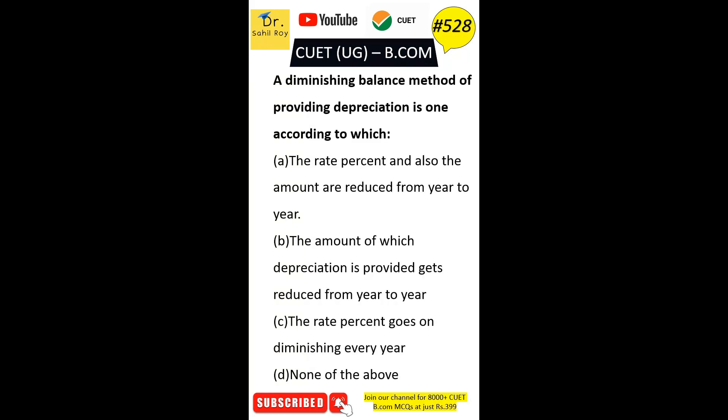A diminishing balance method of providing depreciation is one according to which: Option A: the rate percent and also the amount are reduced from year to year. Option B: the amount of depreciation provided gets reduced from year to year. Option C: the rate percent goes on diminishing every year. Option D: none of the above. The correct answer is Option B.